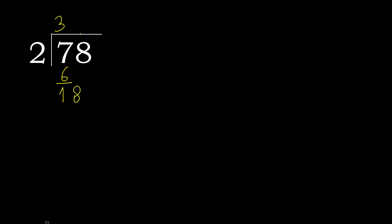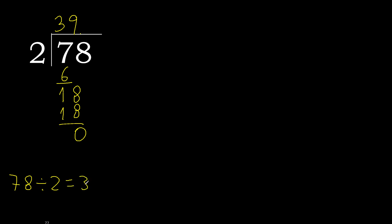Next digit: 18. 2 multiplied by 9 is 18 — is not greater. 18 minus 18 is 0. There is no remaining number, therefore 78 divided by 2 is 39.